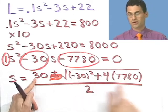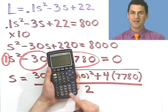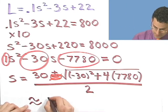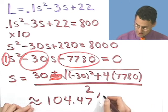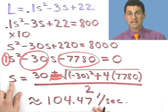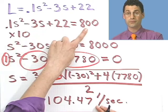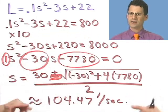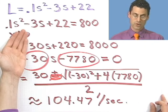So the answer must be 30 plus this square root, all over 2. If you work this out on a calculator, you get around 104.47 feet per second. So that's the speed I should be traveling — 104.47 feet per second — in order to land on my 800-foot runway. All I did was take the formula, set it equal to 800, and then solve using the quadratic formula. A direct, if somewhat faked, example using the quadratic formula to solve a quadratic word problem.